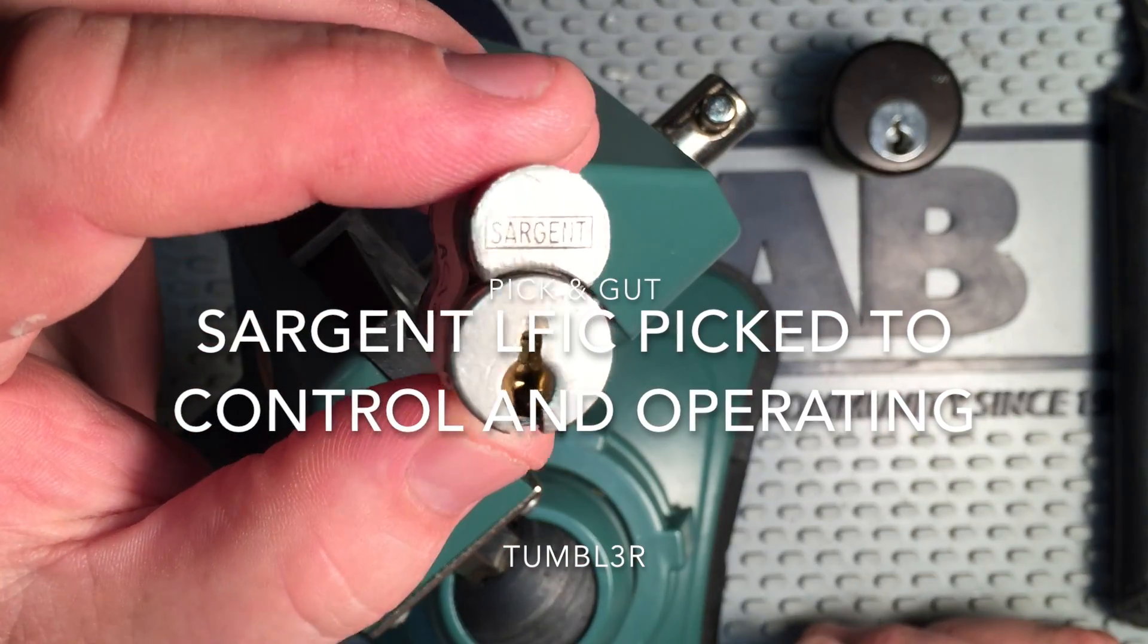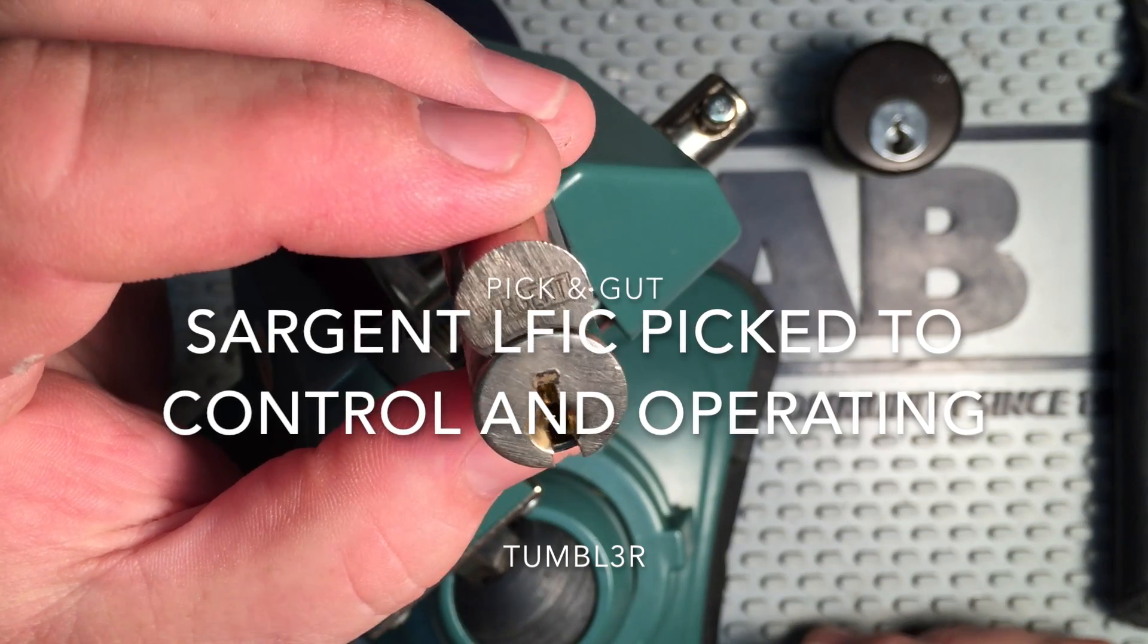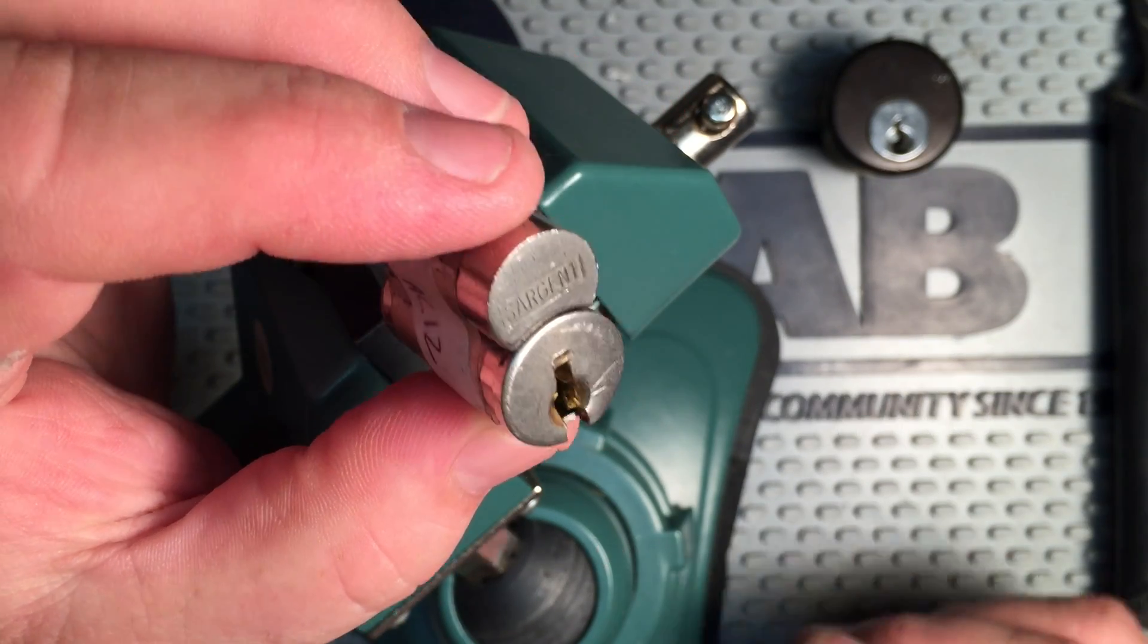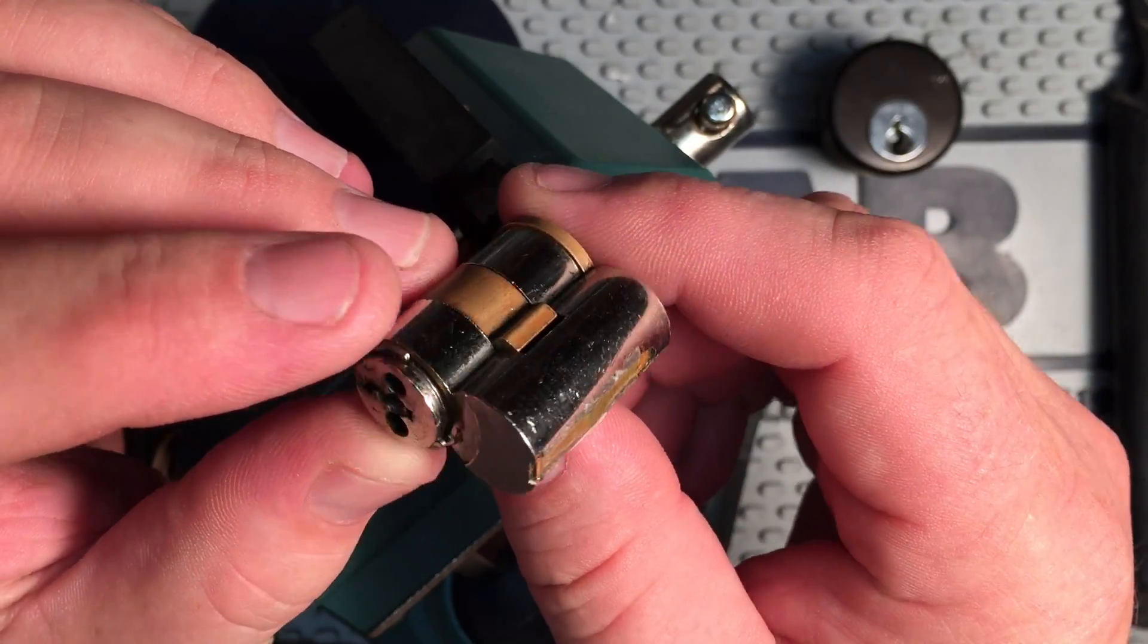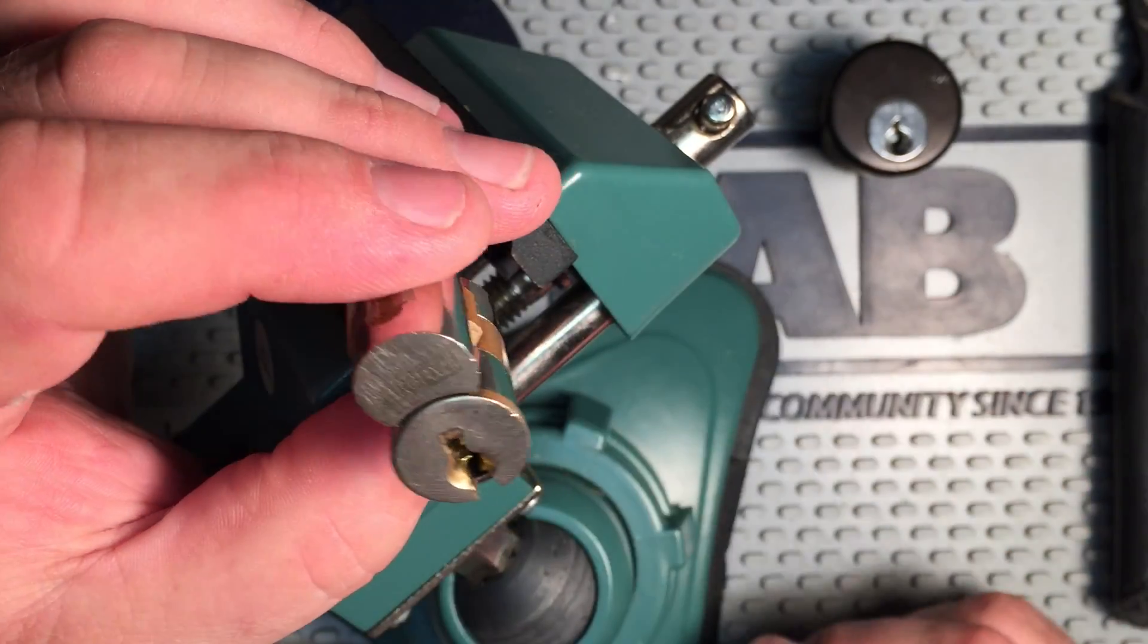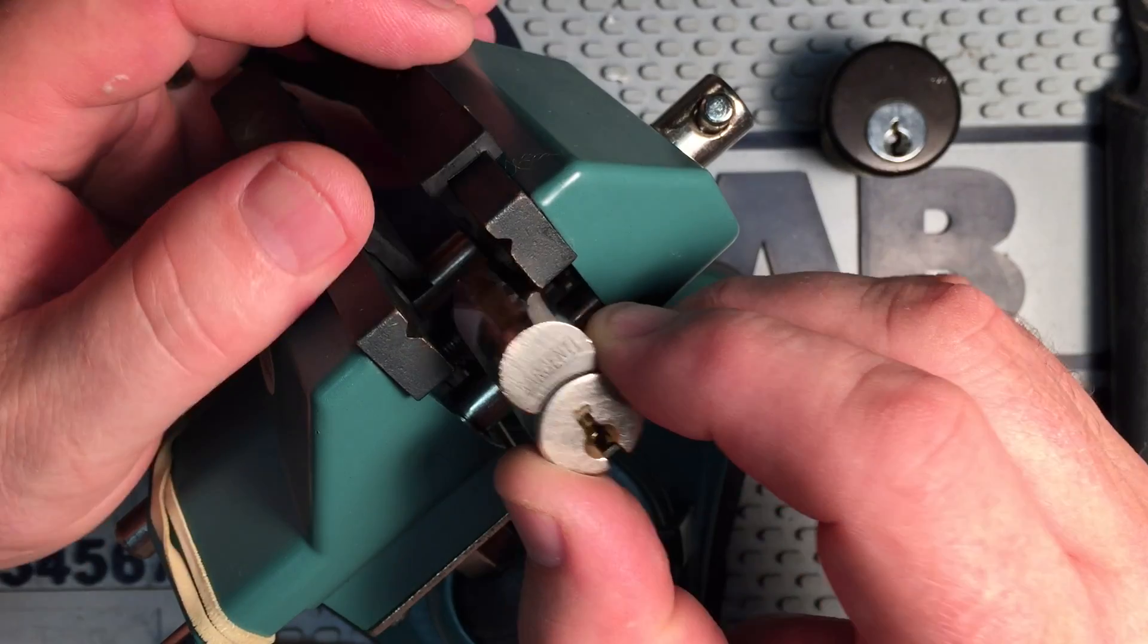Hey everyone. The lock I've got today is a Sargent large format interchangeable core that was sent to me a bunch of months ago by RJ Robert James. By the way, if you haven't checked out his channel, it's a great channel with a lot of really cool locks.